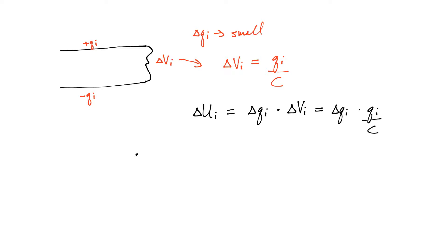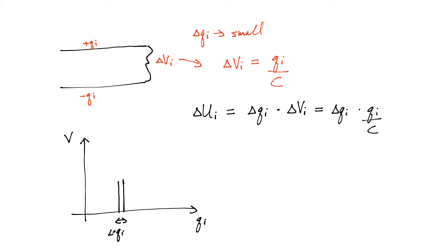What does this look like on a graph? If you plot the voltage on the plates at a particular time versus the charge on the plate QI, I'm transferring a little bit of charge delta QI. At that instant I had some potential difference delta VI. As I transfer more charge, this number increases, and the total energy transfer at any instant is simply the area under the curve.